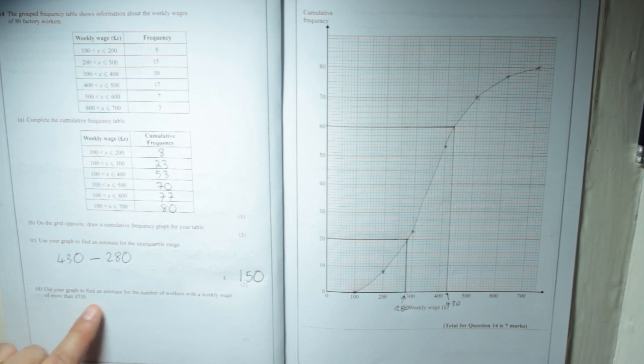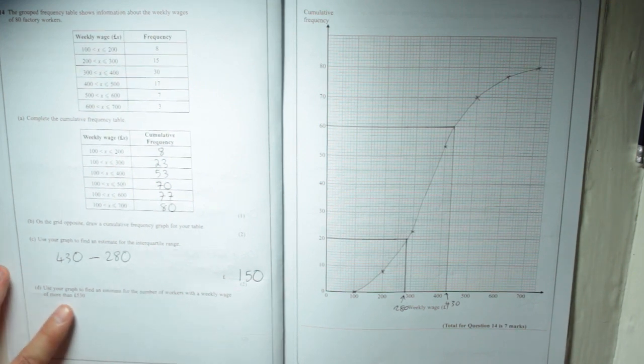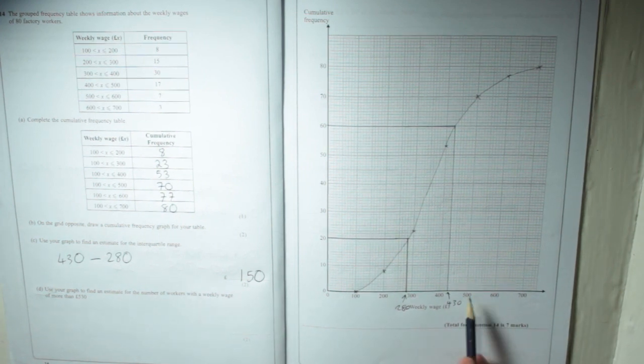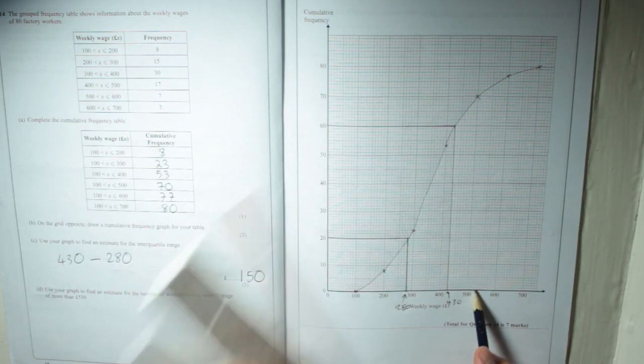Part D, use your graph to find an estimate for the number of workers with a weekly wage of more than 530 pounds. So, to do that, what we're going to do is, we're going to find 530 pounds on our cumulative frequency graph. Well, there's 500. So, one, two, three.